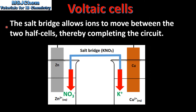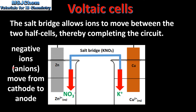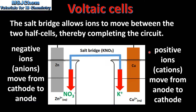Next we look at the salt bridge. The salt bridge allows ions to move between the two half cells, thereby completing the circuit. Negative ions or anions move from the cathode to the anode. Positive ions or cations move from the anode to the cathode. Here you can see the negative nitrate ion moving to the anode and the positive potassium ion moving to the cathode.